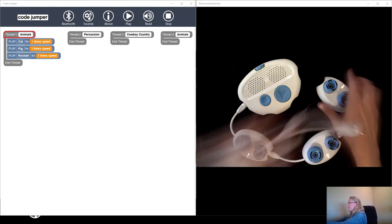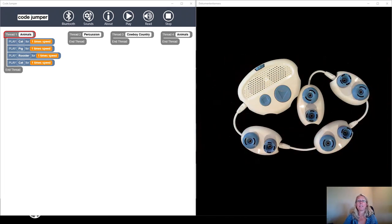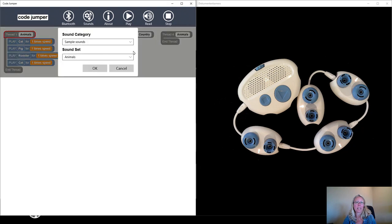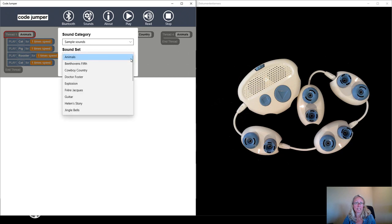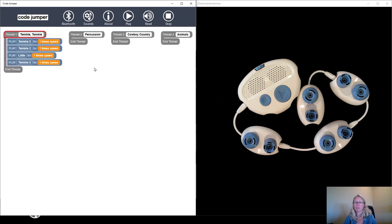Once students have four play pods together and you think they're ready, allow them to change the sound set. You might need to walk them through how to do this again. Select the thread one animals and choose the drop down menu under sound set and let them go down to twinkle twinkle and select okay. They've got four play pods. There's four lines of code for twinkle twinkle and just see what happens. See if they can sequence it properly.